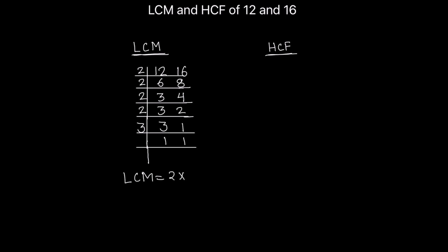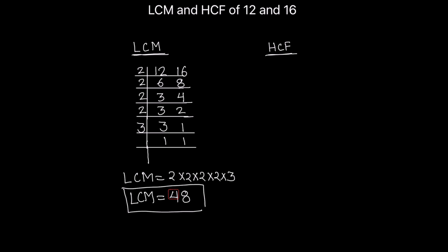The LCM is 2 times 2 times 2 times 2 times 3. Calculating: 2 times 2 is 4, times 2 is 8, times 2 is 16, and 16 times 3 is 48. So the LCM of 12 and 16 is 48. Now let's find the HCF of the two numbers.